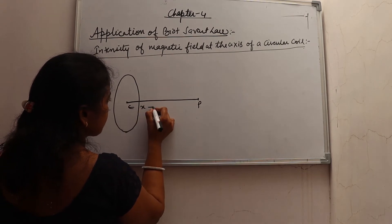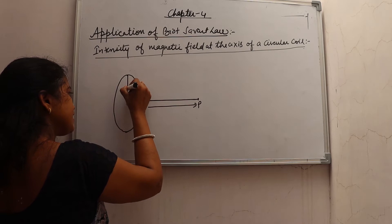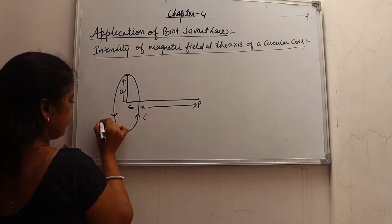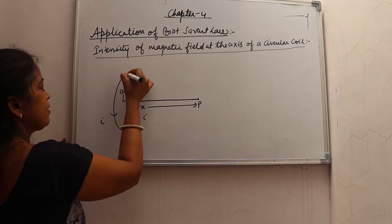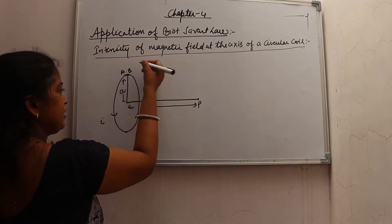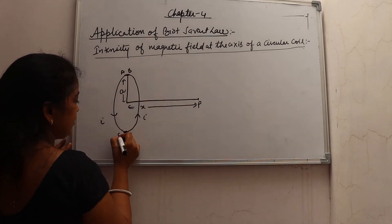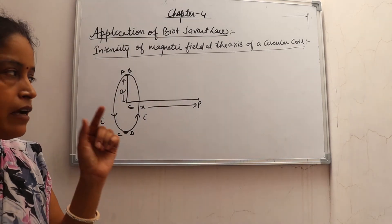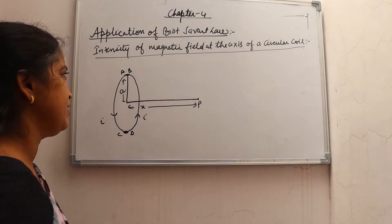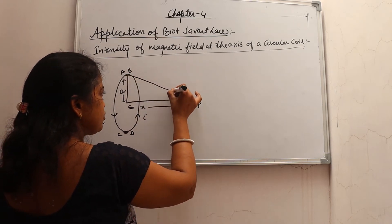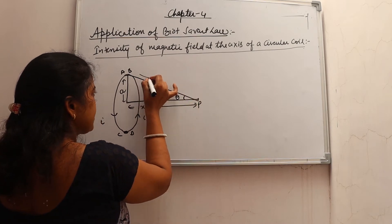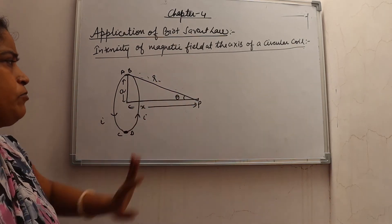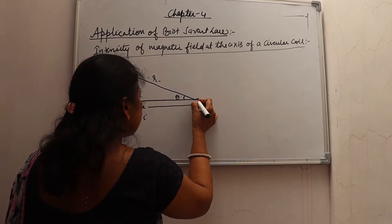The distance from the center to point P is x. We have selected an element AB on the coil — we call it DL. There is also an opposite element CD. The Biot-Savart law is applicable for small elements, small lengths. We have joined the element to point P. The angle between them is theta, and this distance is R. The complete distance from the element to P is R.